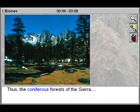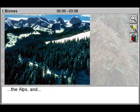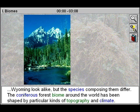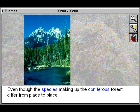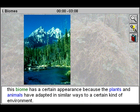Thus, the coniferous forests of the Sierra, the Alps, and Wyoming look alike, but the species composing them differ. The coniferous forest biome around the world has been shaped by particular kinds of topography and climate. Even though the species making up the coniferous forests differ from place to place, this biome has a certain appearance because the plants and animals have adapted in similar ways to a certain kind of environment.